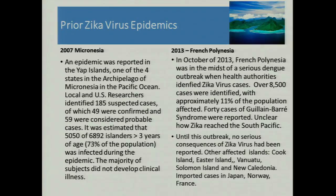Briefly about the epidemics: there was an epidemic in Micronesia in 2007 in the Yap Islands — 49 confirmed cases, 59 probable, with an estimated 73% of the population infected. Patients didn't develop clinical illness. In the French Polynesia in 2013, there was a serious dengue outbreak and then Zika virus emerged; 11% of the population appeared affected, with a rise in Guillain-Barré cases reported from the islands. It's unclear how the virus reached the South Pacific.